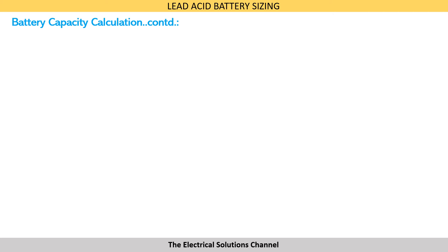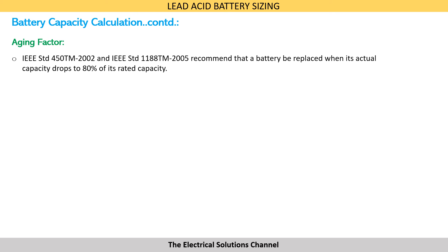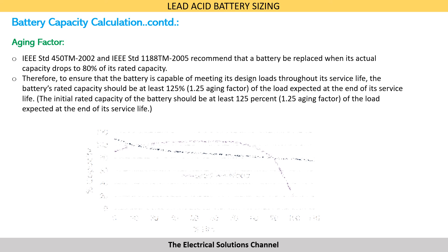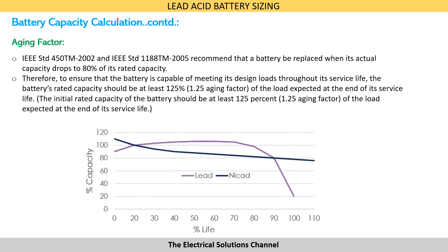Aging factor: IEEE 450 and IEEE 1188 recommend that a battery be replaced when its actual capacity drops to 80 percent of its rated capacity. Therefore, to ensure that the battery is capable of meeting its design load throughout its service life, the battery's rated capacity should be at least 125 percent - that is, an aging factor of 1.25 - of the load expected at the end of its service life.